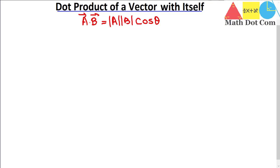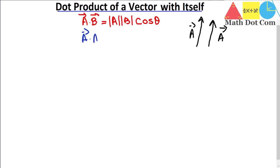Here we have two different vectors, but if we say we have only one vector — let's call it A — and we have to find its dot product with itself, then the other vector will also be A. So A dot A equals the magnitude of A times the magnitude of A times cosine theta.